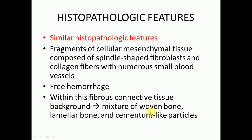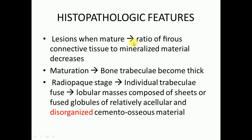Within the fibrous connective tissue background there can be a mixture of woven bone, lamellar bone, and cementum-like particles. As lesions mature, the ratio of fibrous connective tissue to mineralized material decreases — meaning mineralized material increases as the lesion matures. In the maturation stage, bone trabeculae become thicker, appearing more radiopaque. In the radiopaque stage, individual trabeculae fuse with each other and there can be lobular masses composed of fused globules of relatively acellular and disorganized cemento-osseous material.